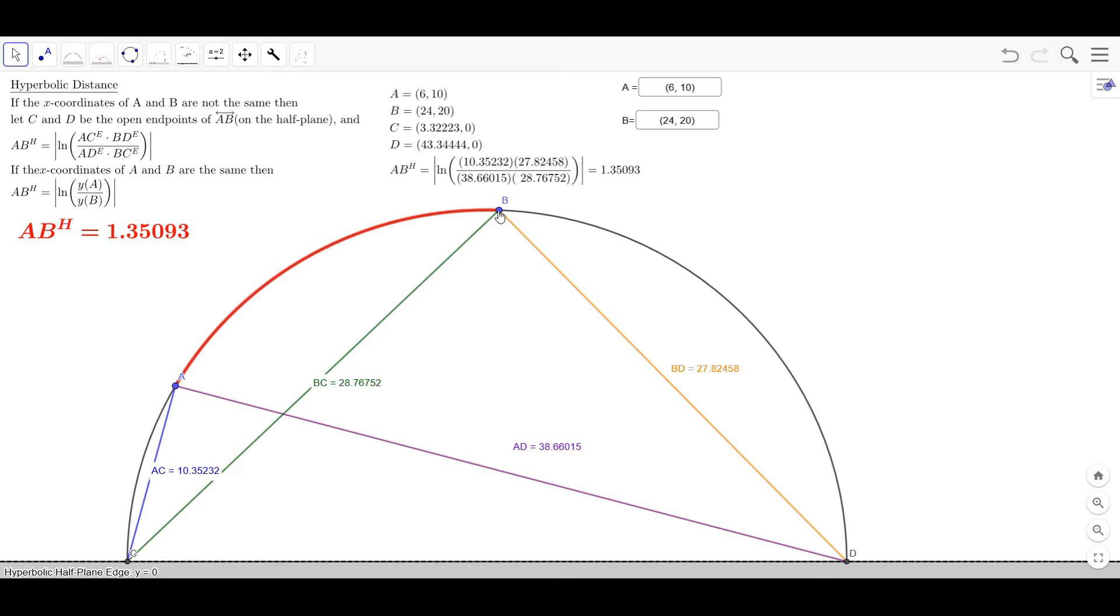And it's normally going to be a semicircle like this with the endpoints on the edge which is the x-axis, the edge of the hyperbolic half plane.